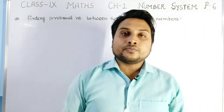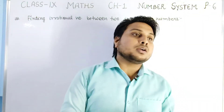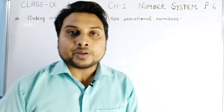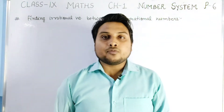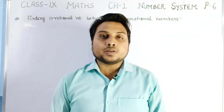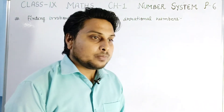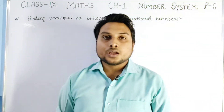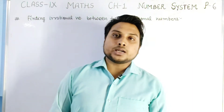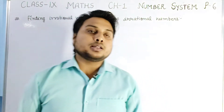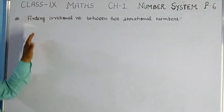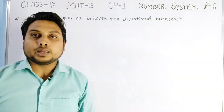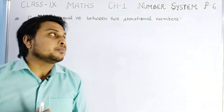We studied how to convert decimals into the form of p/q for terminating type decimals as well as for non-terminating but repeating type decimals. One topic started in part 5 was finding irrational numbers between two irrational numbers.